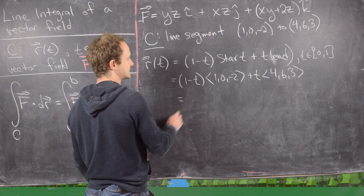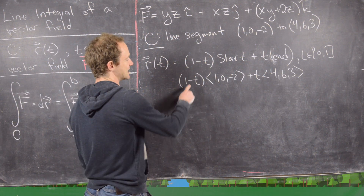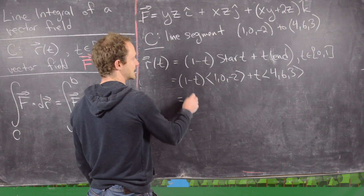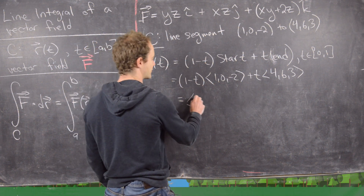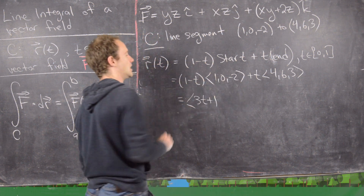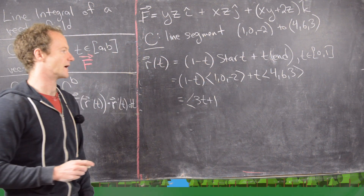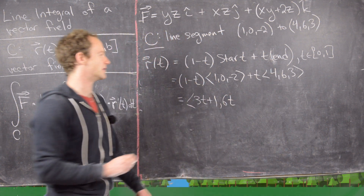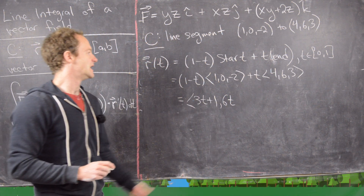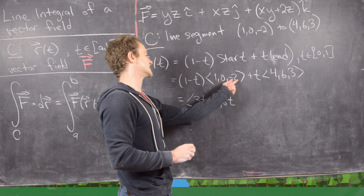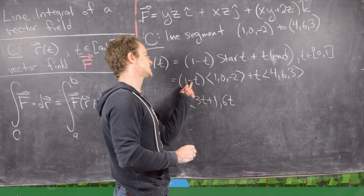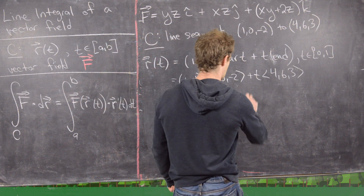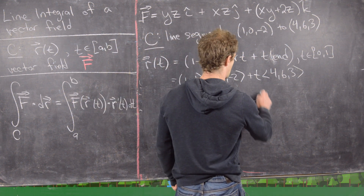Expanding the components: the first component gives (1 - t) + 4t = 3t + 1. The second component gives 6t. The third component gives -2(1 - t) + 3t = 5t - 2. So R(t) = <3t + 1, 6t, 5t - 2>.